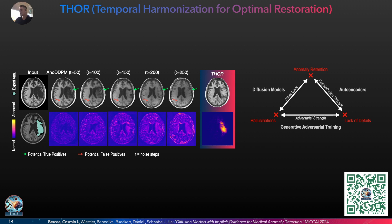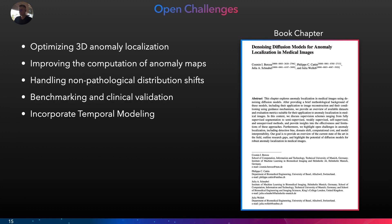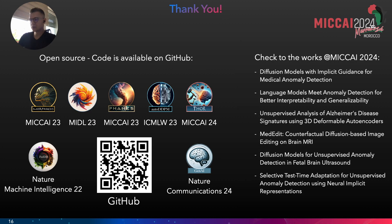We propose to mitigate this issue by adapting the reverse process of diffusion models for anomaly detection in our recent work, which you can see now at MICCAI. The field is not solved and there are many open challenges to work on in the future. All the code developed in this PhD is available online, and if you are attending MICCAI, please check it out. Thanks.